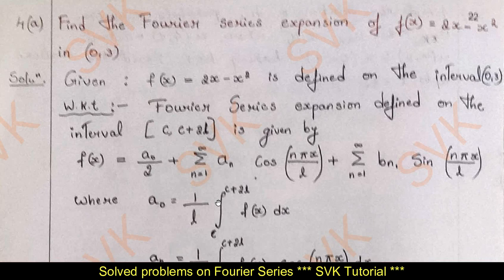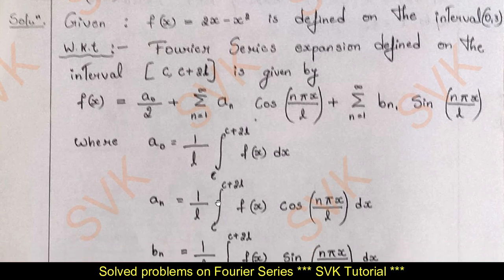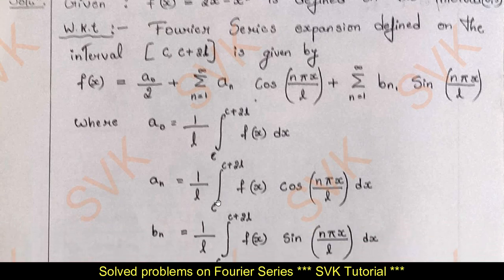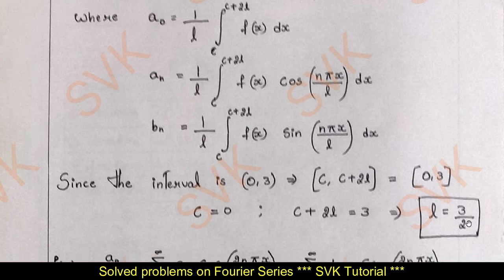Write down the values of a₀, aₙ, and bₙ. Since the interval is 0 to 3, that implies c to c + 2l equals 0 to 3. With c = 0, we get c + 2l = 3, and therefore the value of l is 3/2.